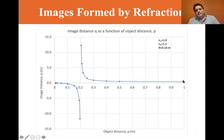Here I just use N1 equals air 1.0, N2 equals 1.5, which is glass, and a radius of 0.10 meters, 10 centimeters. You can see that we have object distance P here in meters and image distance Q in meters. As the object is one meter away, the image distance is some way down there, about 20 centimeters.